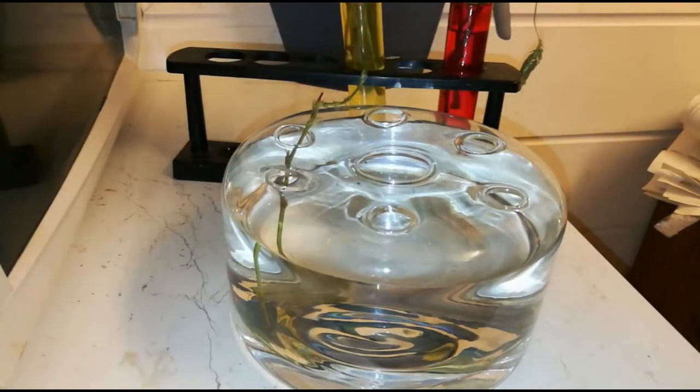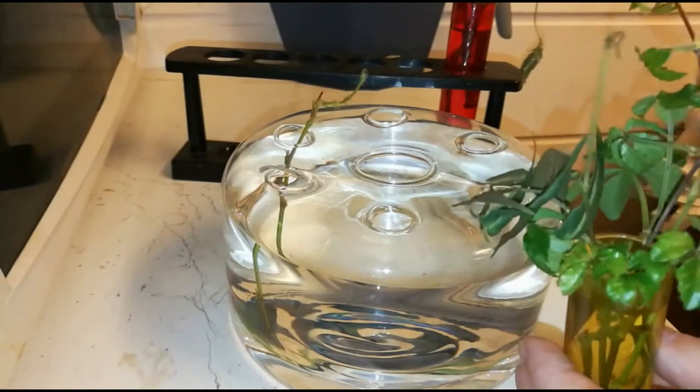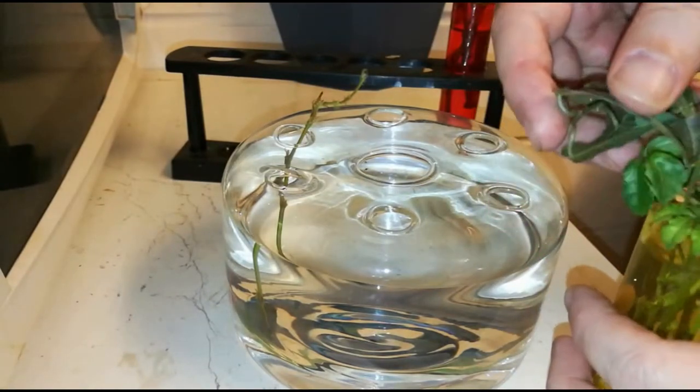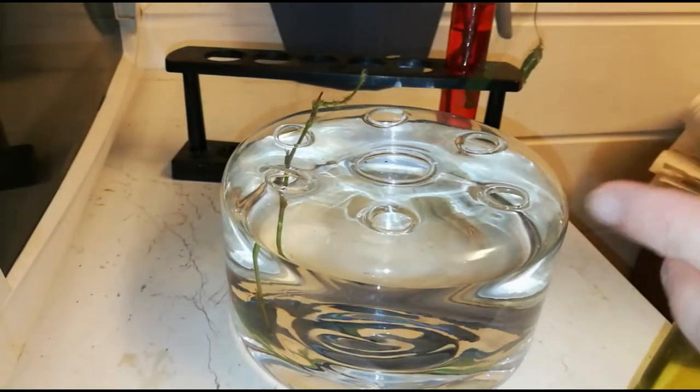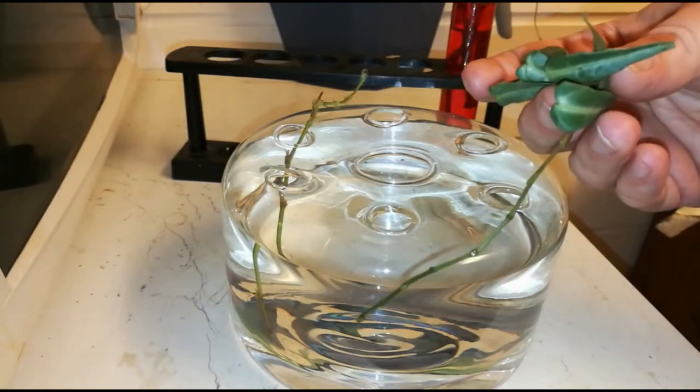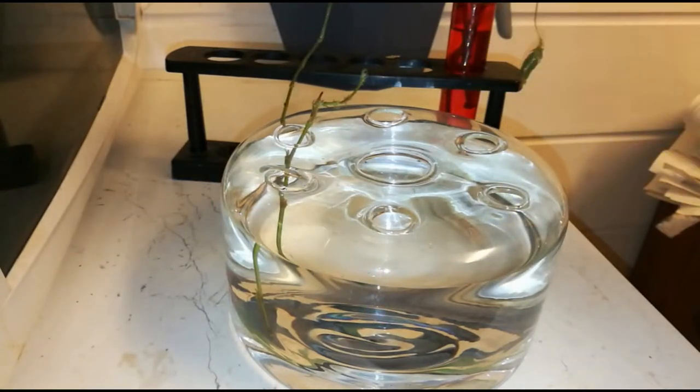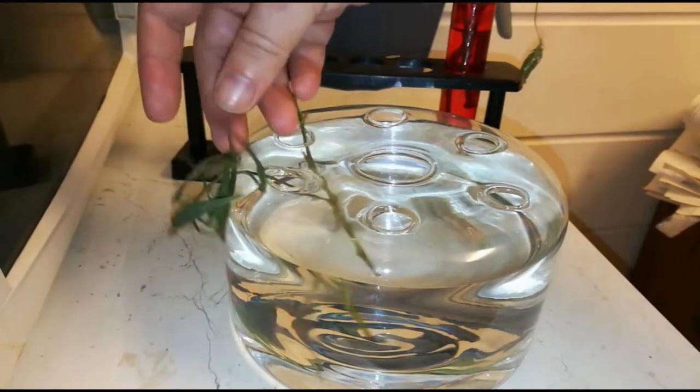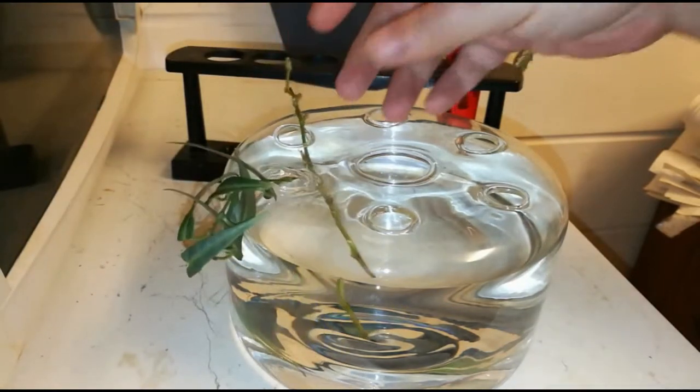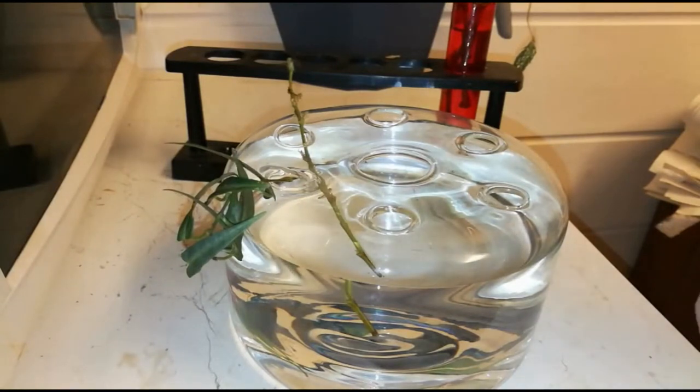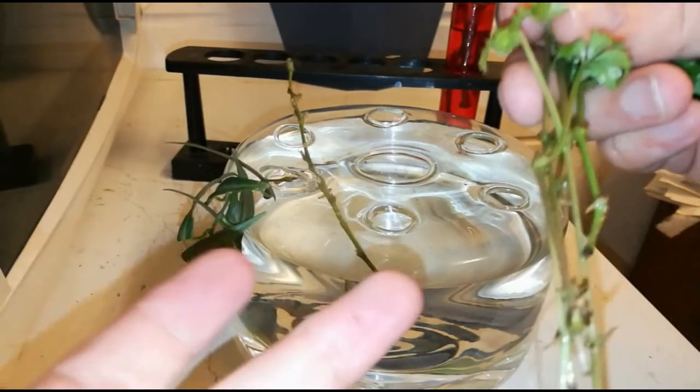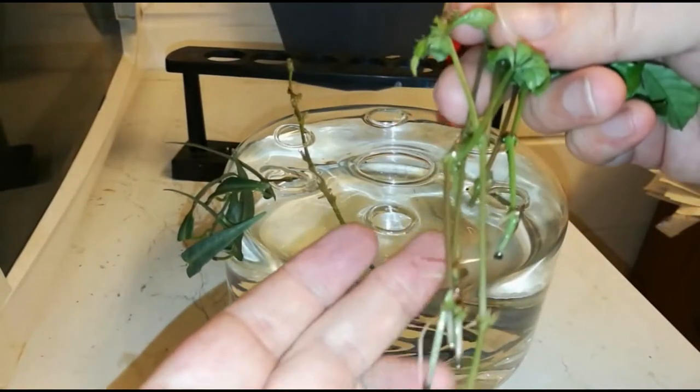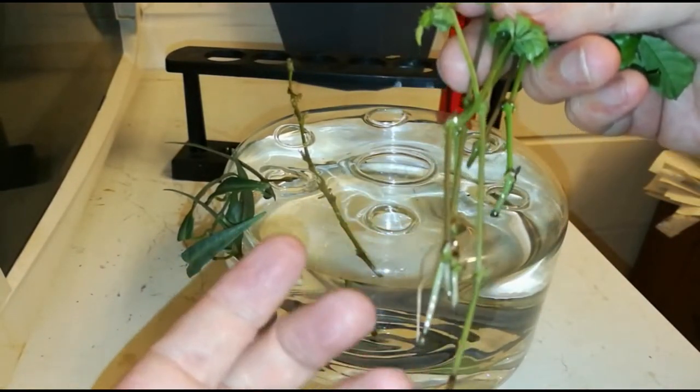And then there's some Scindapsus. This is the Scindapsus Amazonica. This roots pretty easily. I just took this cutting yesterday. That roots really easy. Or easier than a lot of the other things here. Some Scindapsus Pictus. Some of these already have roots. Like there and there.